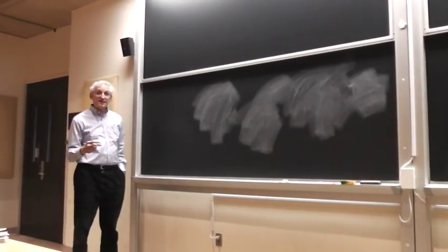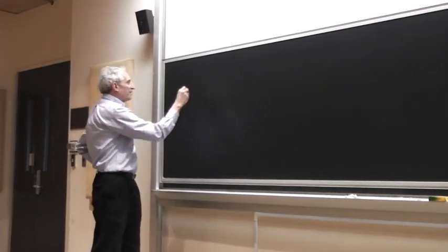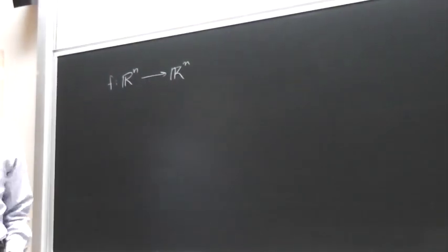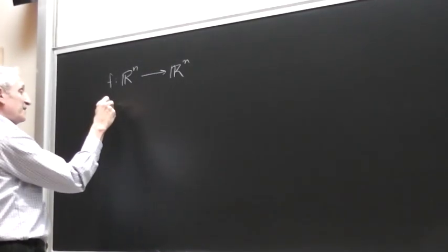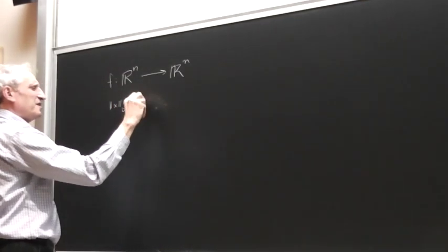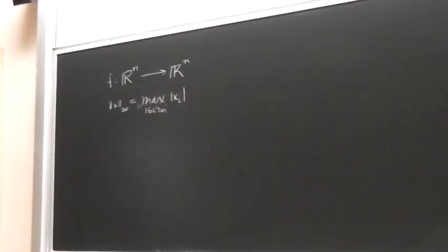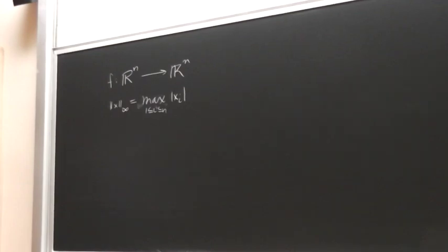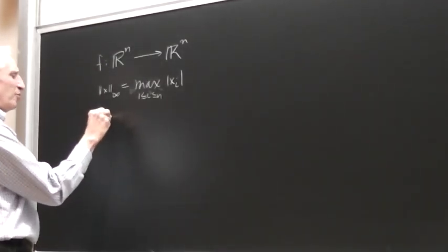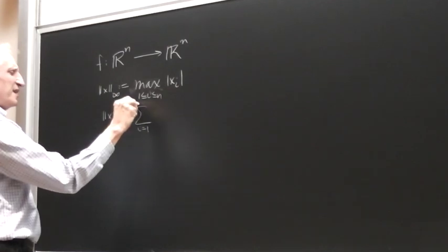So the situation is this. We've got a map f which takes R^n to R^n. And I take some norm on R^n. I'm going to take what's usually written as the sup norm or the L-infinity norm. This is just by definition the maximum. There are many other interesting norms which you can put on R^n. Let me just mention the L1 norm, which I'm going to come back to later, which is by definition the sum from i equals 1 to n of absolute value x_i.